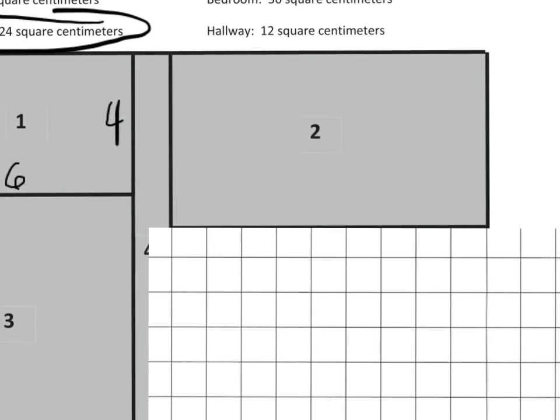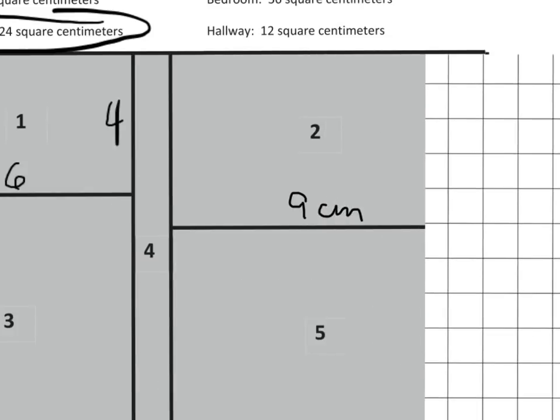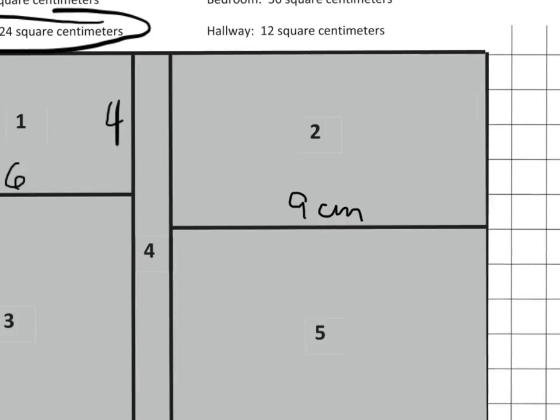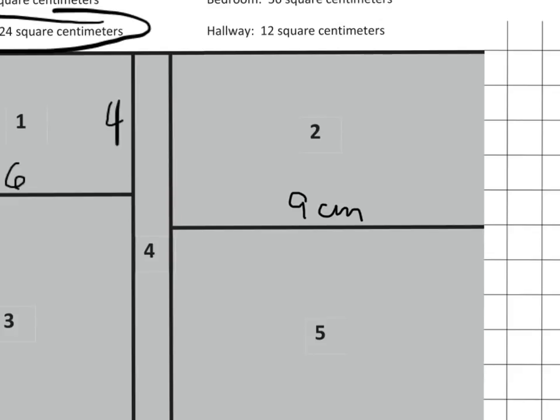And then I can count. We've got 1, 2, 3, 4, 5, 6, 7, 8, 9. So this is 9 centimeters going across. 9 centimeters going across. And then let's go way over here and I'll line it up right here. And then I can count that this is 1, 2, 3, 4, 5 centimeters going up and down.